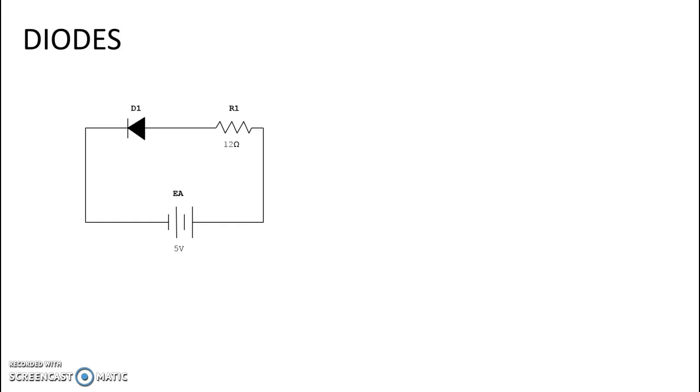Now we say like a short and like an open because we are talking about how it reacts to the flow of current. So a reverse biased diode will stop the flow of current and it will act like an open, although there is not an actual physical open in the circuit.